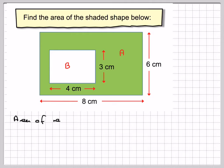To find the area, we're going to take the area of rectangle A, which is 8 times 6, which gives me 48.